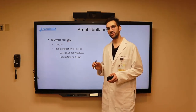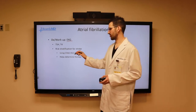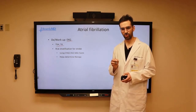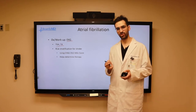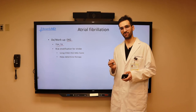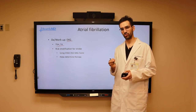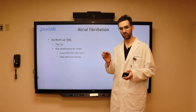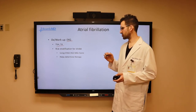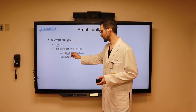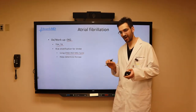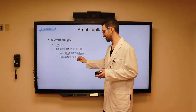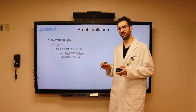Additionally, because thyroid disease can tip patients into AFib, we are going to get a TSH as well as a T4. It is also very important that we stratify these patients in terms of their risk for stroke, because as we stated previously, these patients are at an increased risk for CVA given the potential for clot formation in the left atrial appendage that can be sent to the brain. Therefore, we're going to do this using the CHADS2-VASc score, which will help determine therapy, especially whether or not to give anticoagulation.